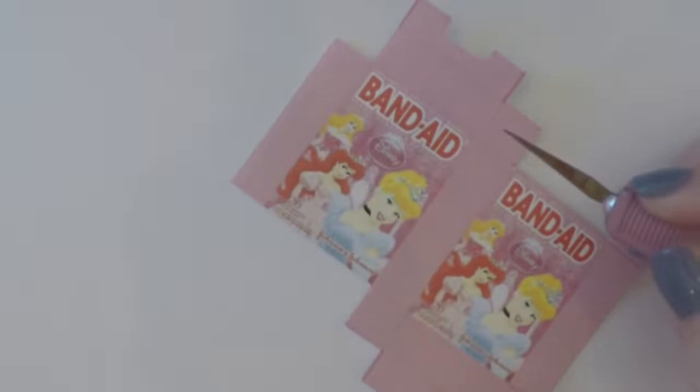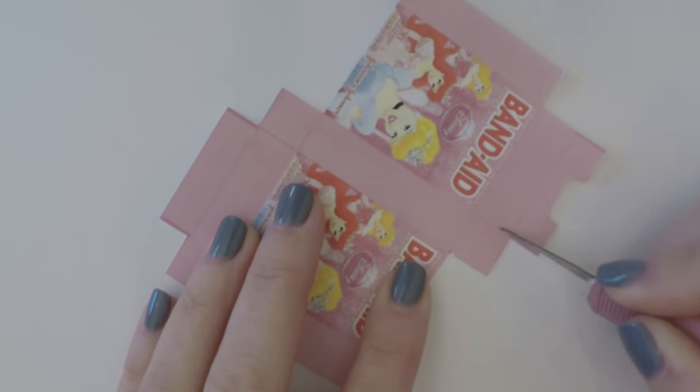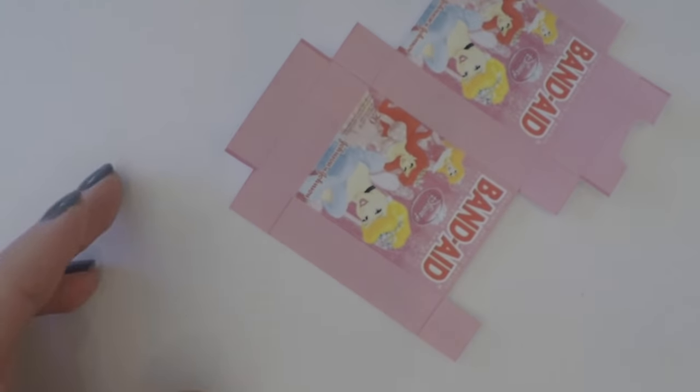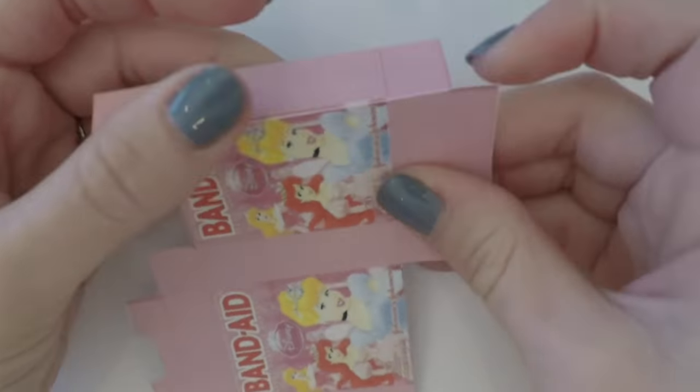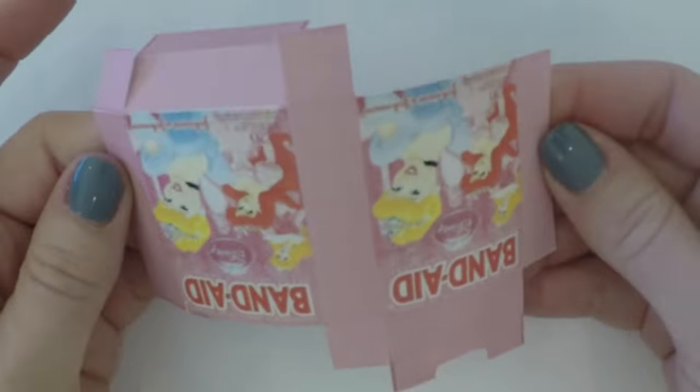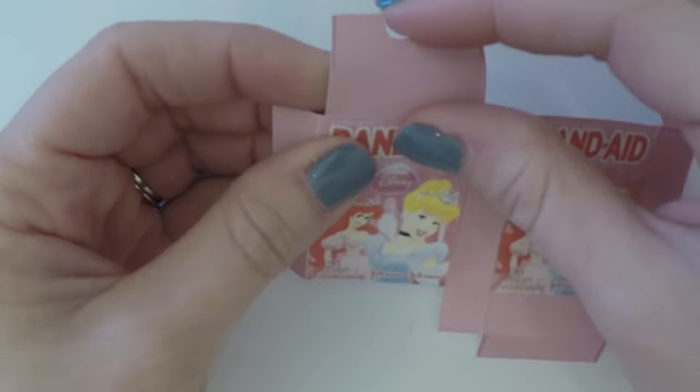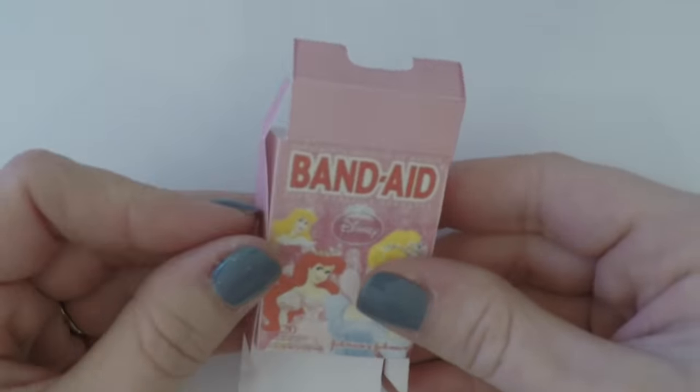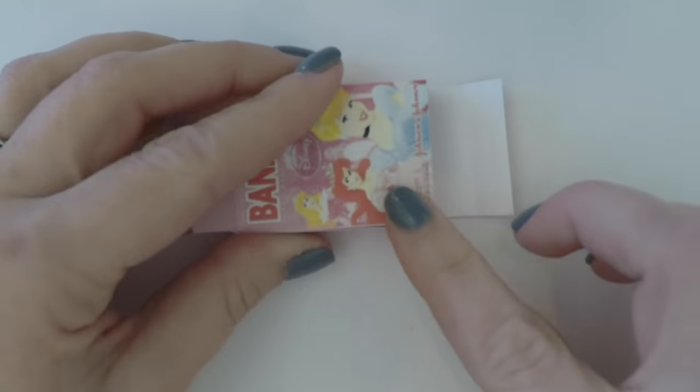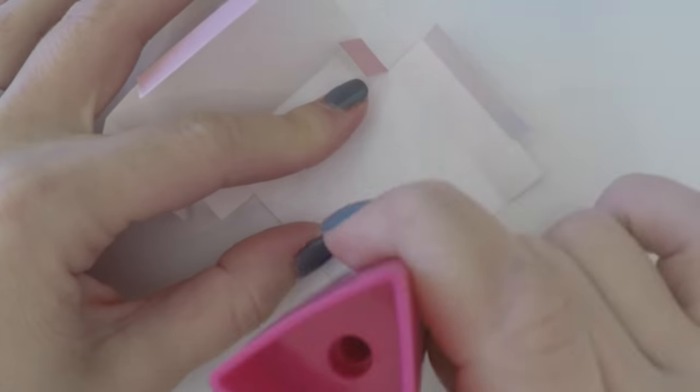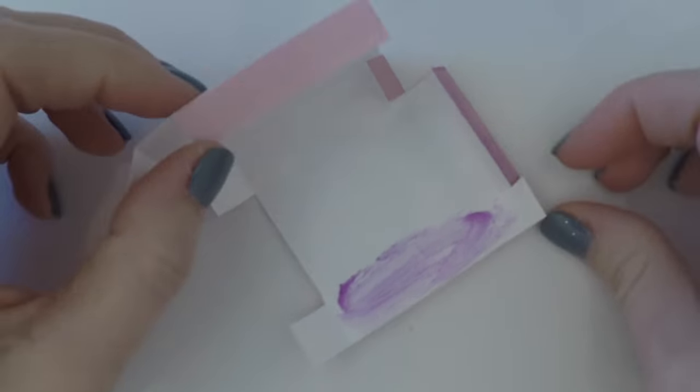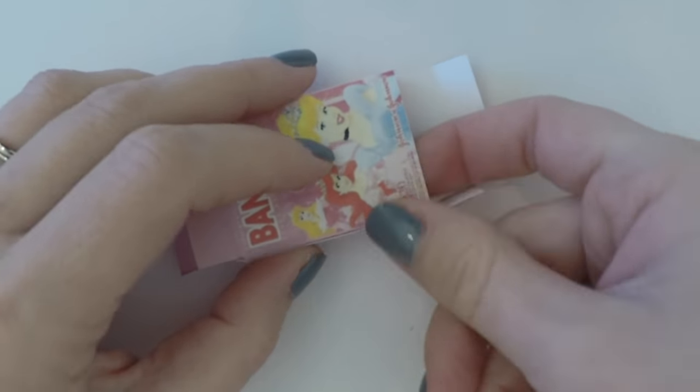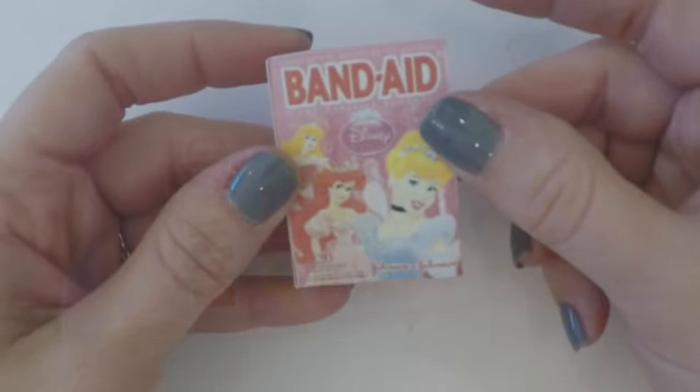Now be sure to score all the lines so it's easier to bend into shape. Also cut the little tabs so they'll fold into the box. Now you can bend it, fold it, and use a glue stick to glue it into place. You'll want to leave the top open so you can add the band-aids in it later. For your box to have the best shape, print it on cardstock paper.